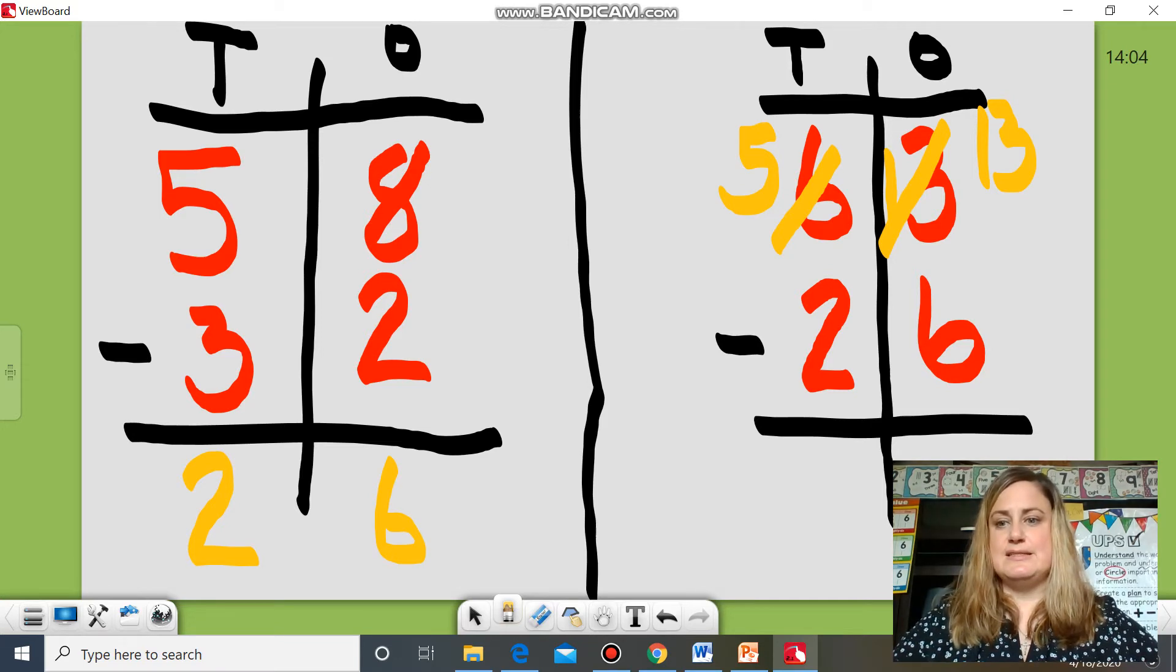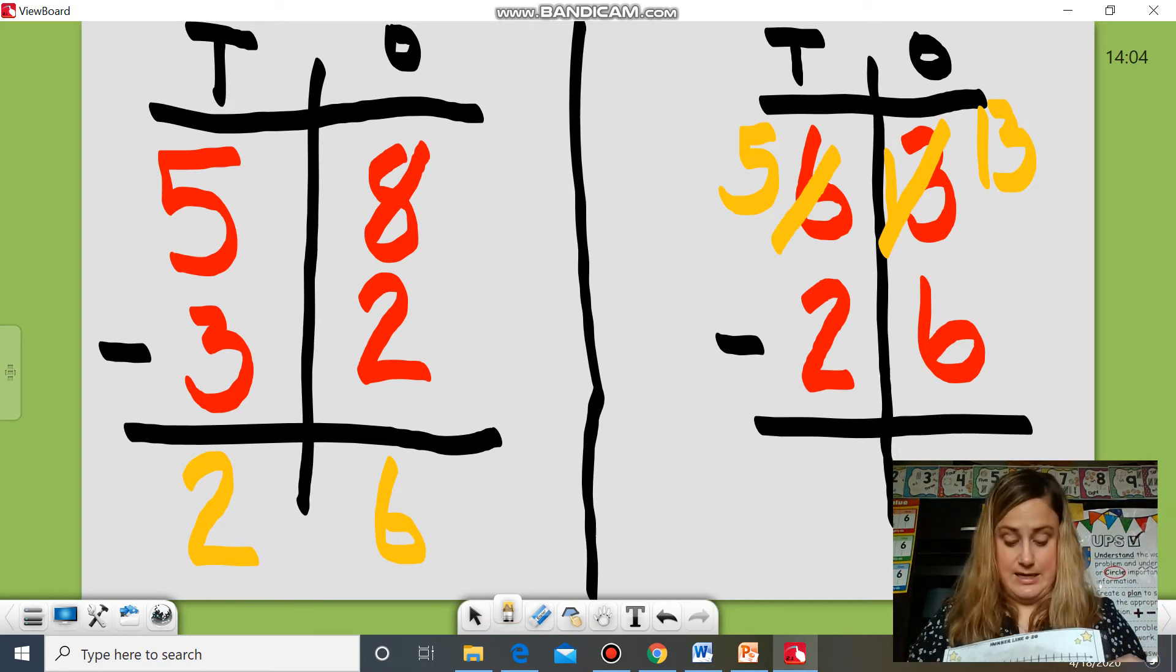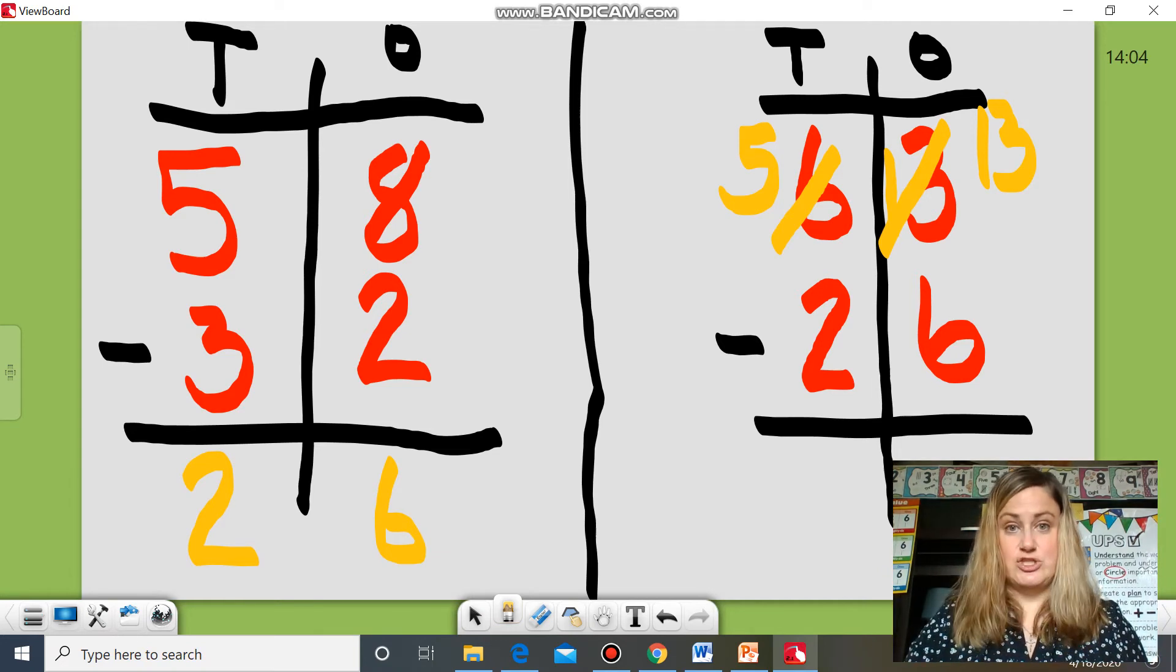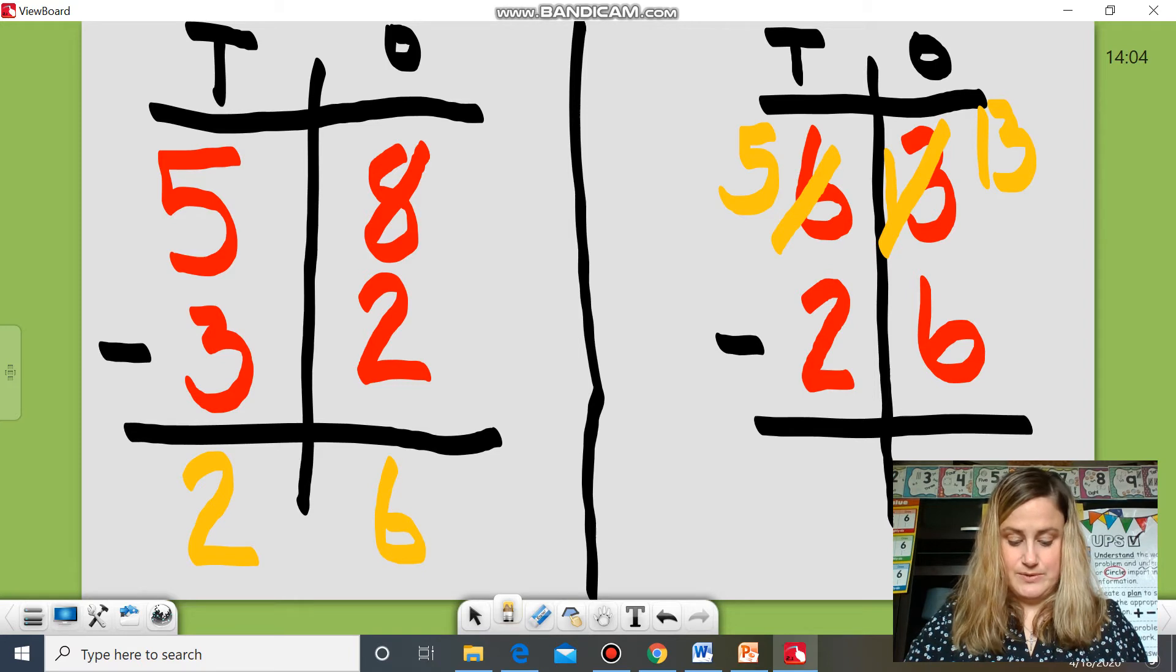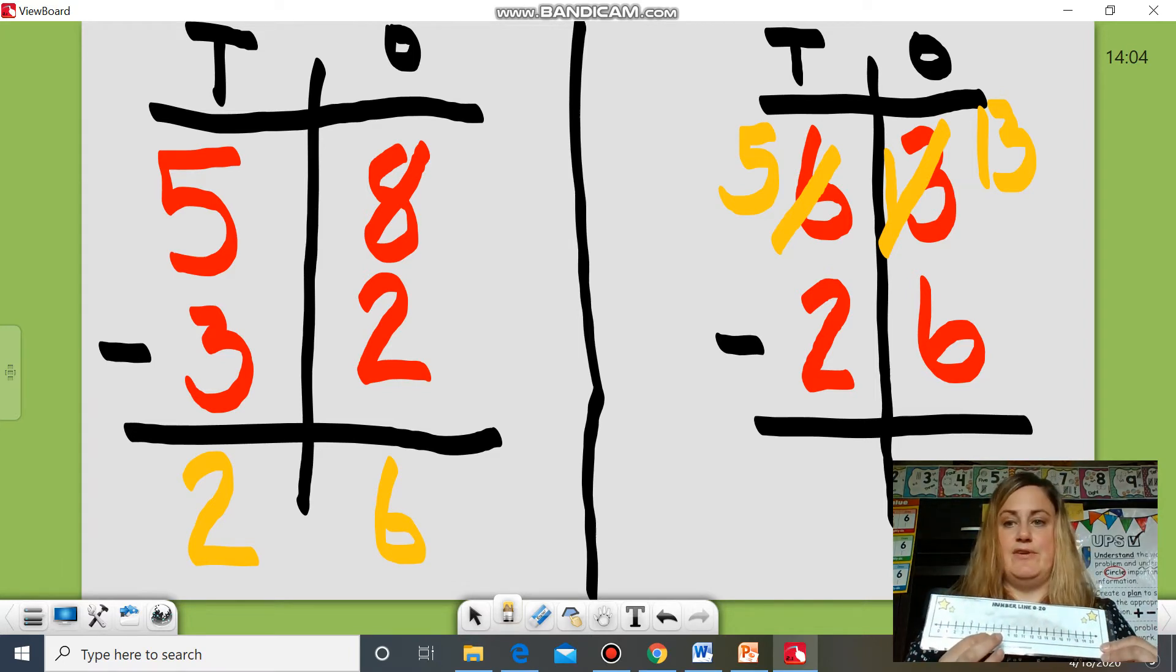So I have 13, take away six. So if I start at 13, I could count back six. I could draw 13 circles, cross off six. I could use a number line and I could start at 13 and jump back six. So I would say start 1, 2, 3, 4, 5, 6. And I land on seven.